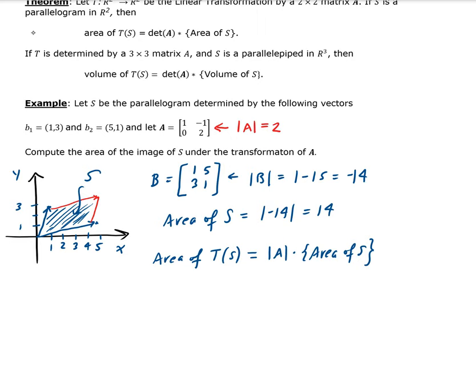The determinant of A is 2, and the area of S is 14. So the total area of T(S) is 2 times 14, which equals 28 square units.